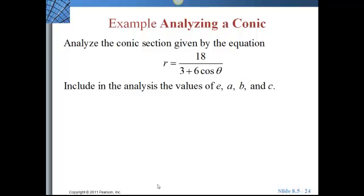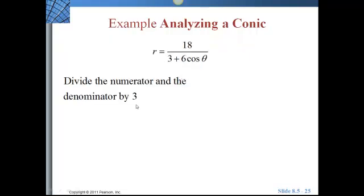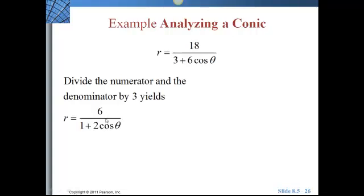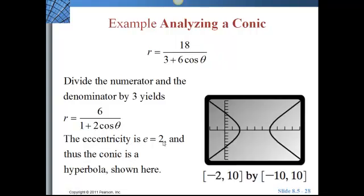Let's analyze the conic section given by the equation R equals 18 divided by 3 plus 6 cosine theta. We want to look at what is E, A, B, and C. Except I don't think we're going to get that far in our figurings. But we'll take a look at it. So the first thing we want to do, we want a 1 here. So we're going to divide through by 3. So we get 18 divided by 3 is 6, 3 divided by 3 is 1, 6 divided by 3 is 2. So we have 6 divided by 1 plus 2 cosine theta. It tells us the eccentricity is 2. 2 is greater than 1, so therefore it is a hyperbola. That's as far as we're going to take these for right now.